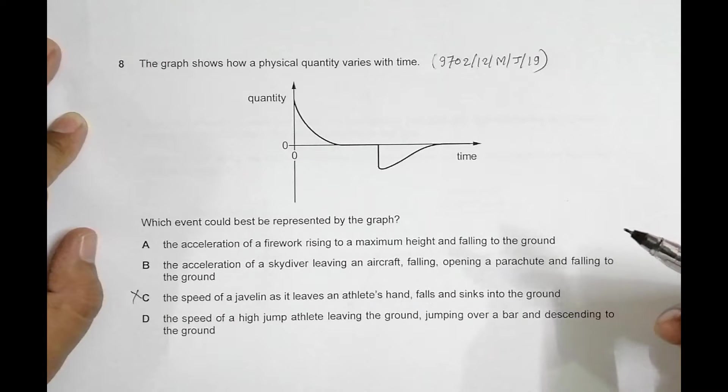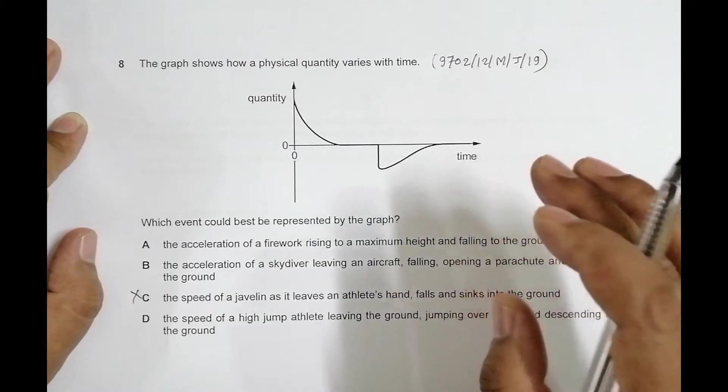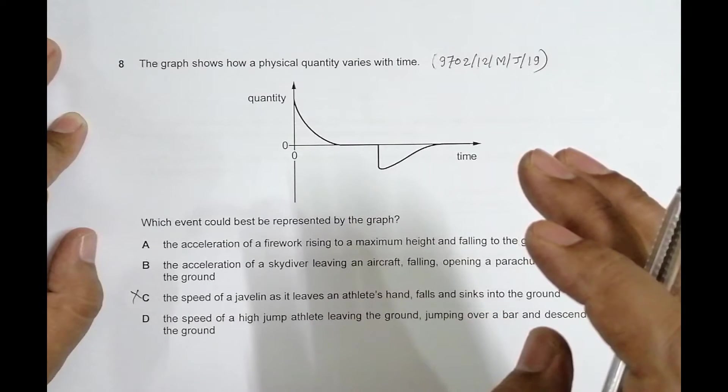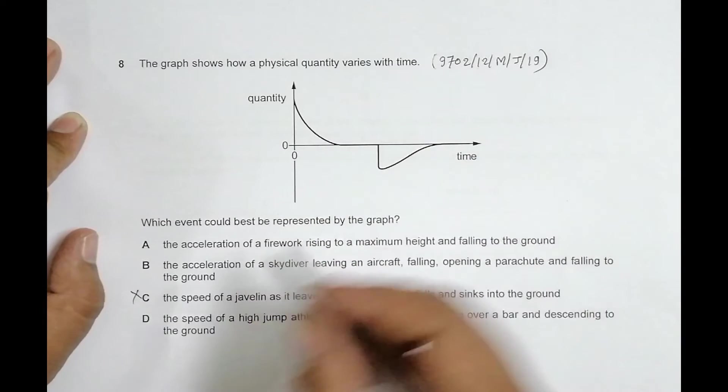the speed can be zero for a moment only, but here the speed is zero for a considerable moment of time, so this also is incorrect. Now choice A and B.